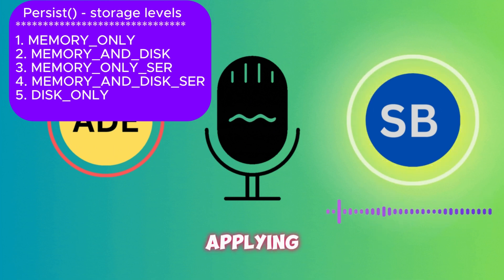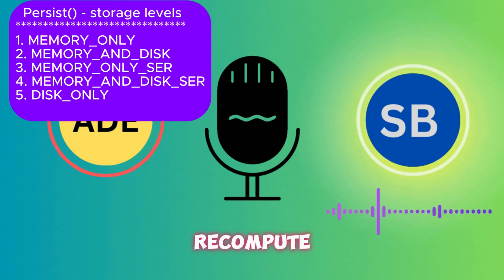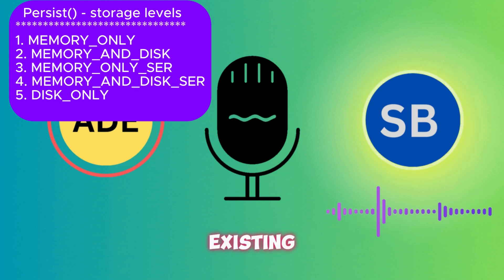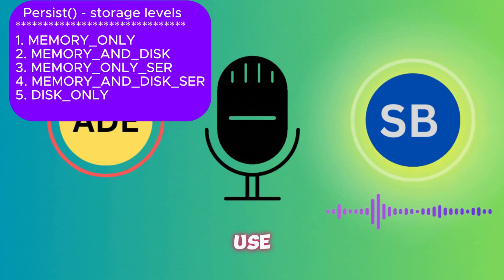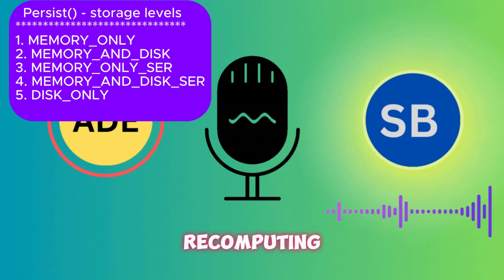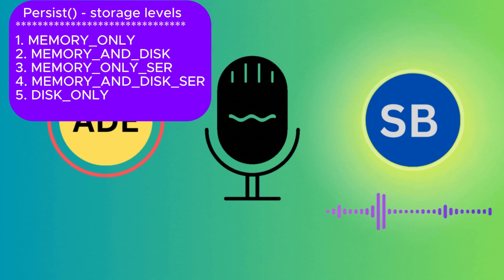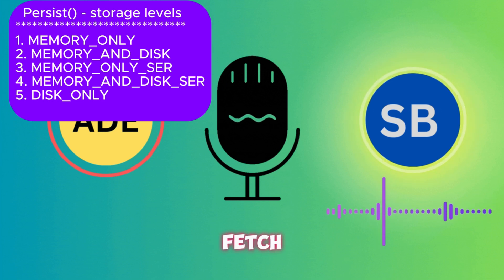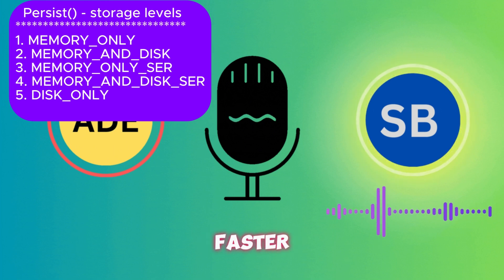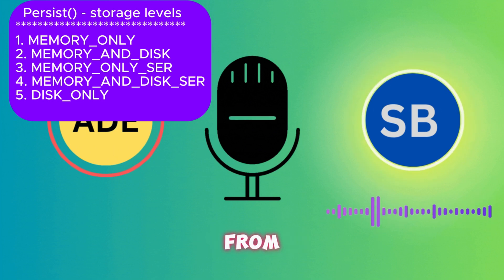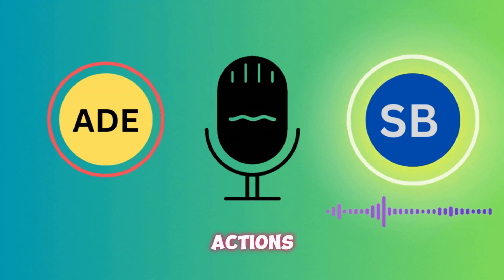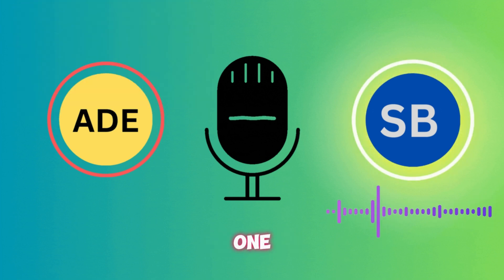You should use caching whenever you are recomputing operations on an existing RDD. Instead of recomputing the data again and again, Spark will use the cache to fetch the data, which is much faster compared to loading the data from scratch.